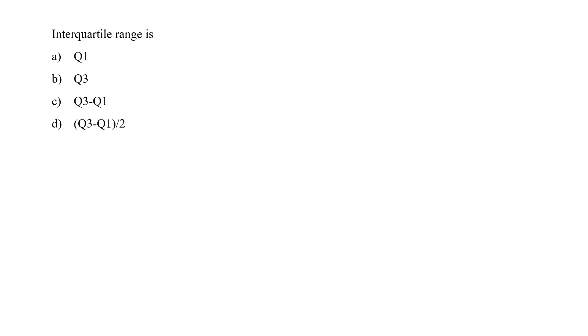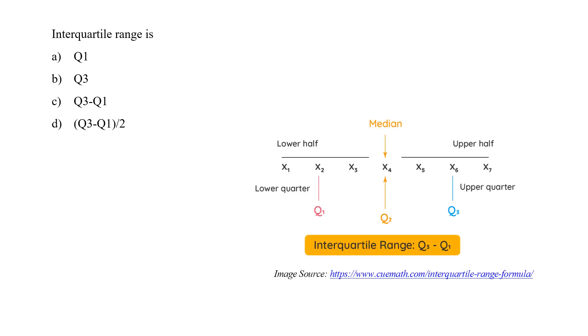Interquartile range is Q1, Q3, Q3 minus Q1, Q3 minus Q1 by Q2. IQR describes the middle 50 percent of values when ordered from lowest to highest. If we calculate the formula for interquartile range or IQR, then the formula comes as Q3 minus Q1. So option C would be the correct answer—Q3 minus Q1 is the correct formula for calculating the interquartile range.